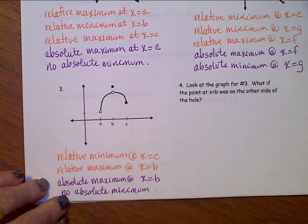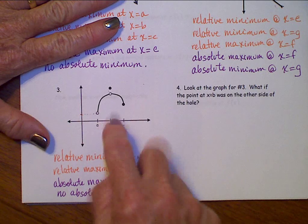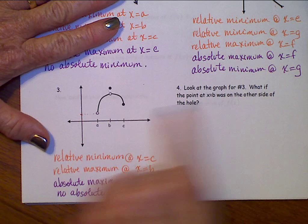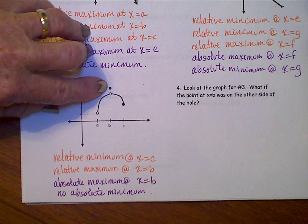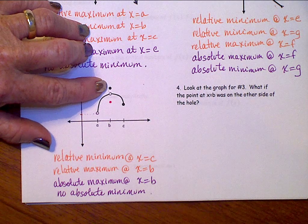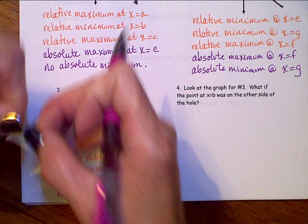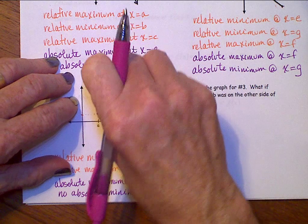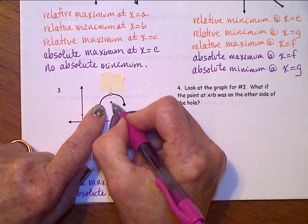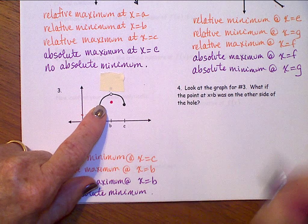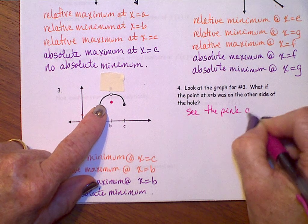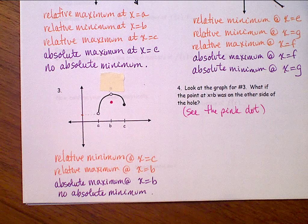Now what if we look at this graph over here, and instead of the point at x equals b, instead of it being up there, what if it was down here? And to help you see that, let me cover up that point up here. So you have to look at this point now.